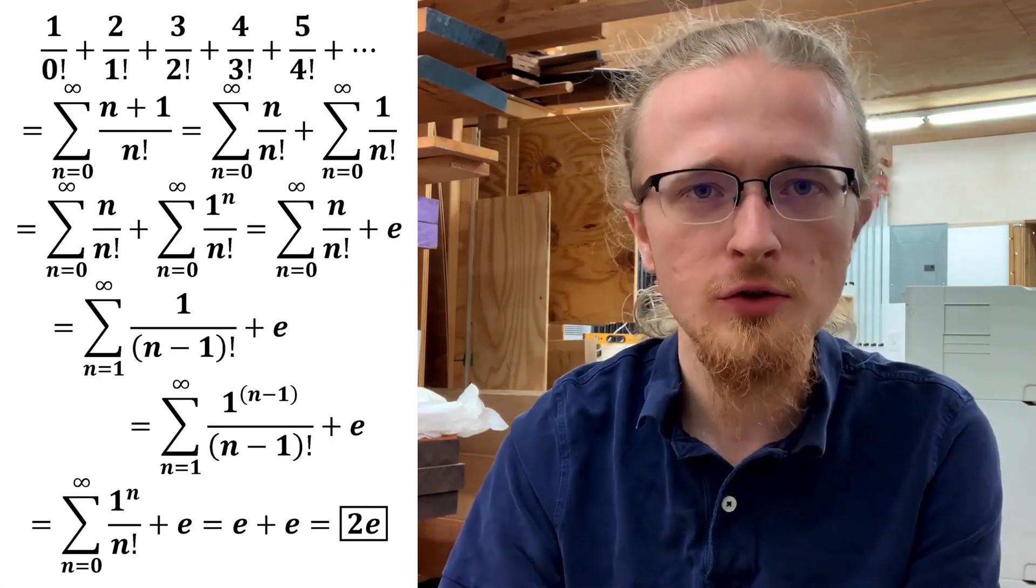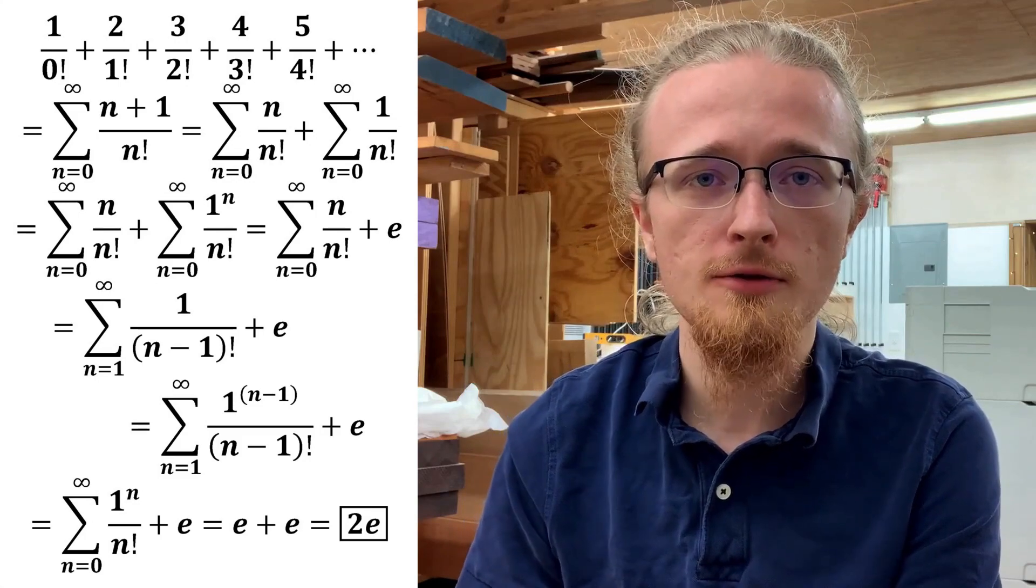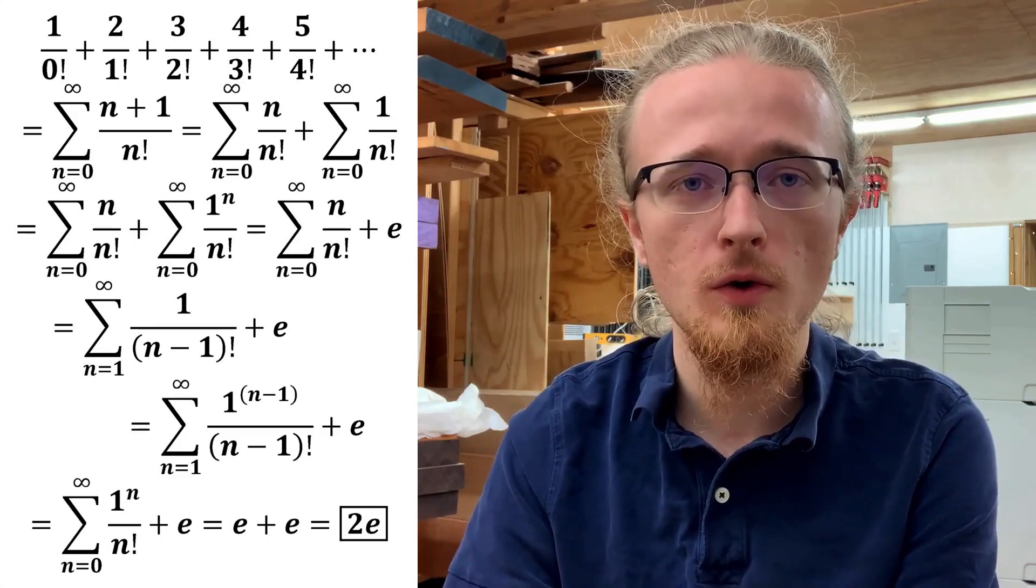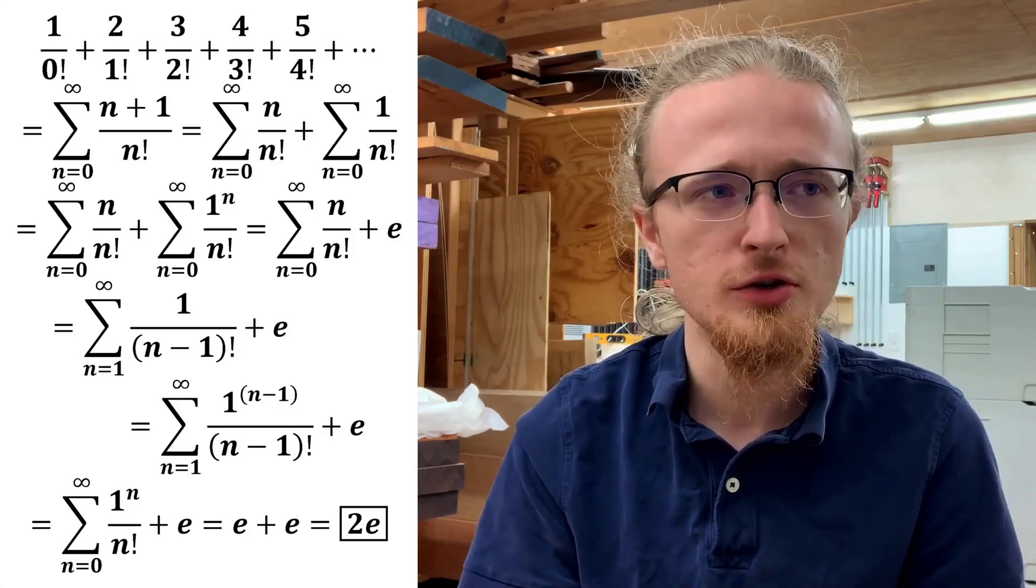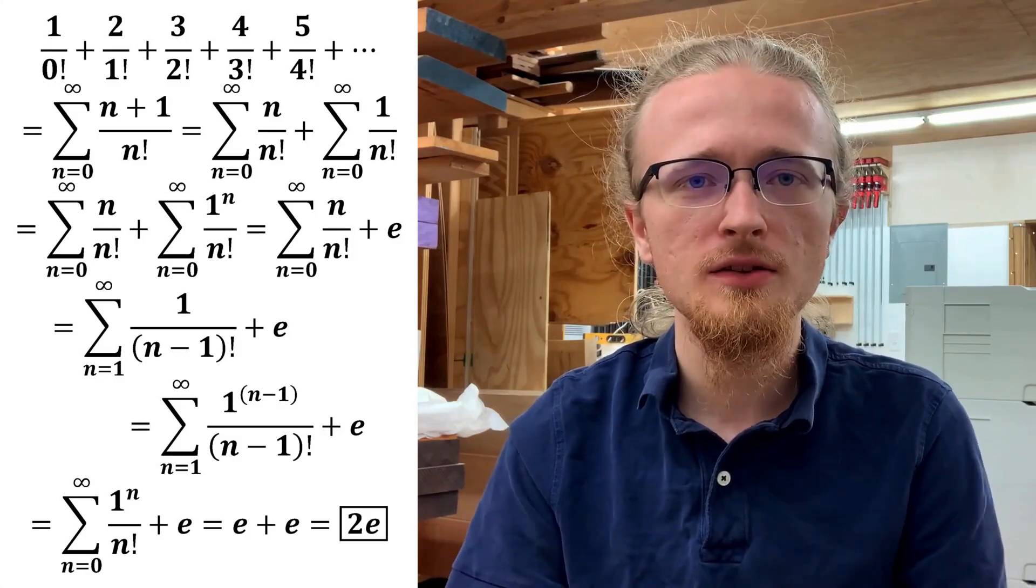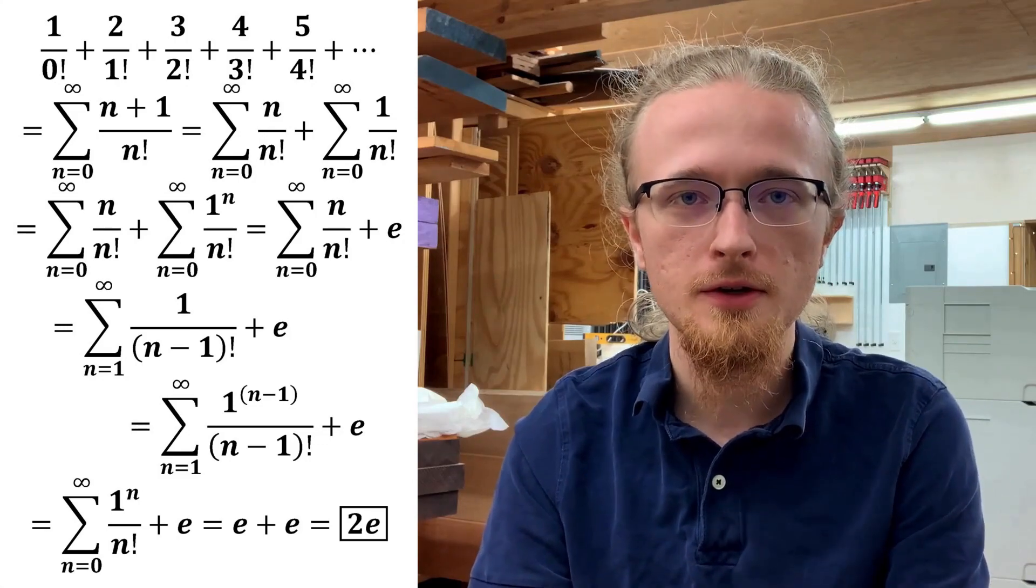Instead of just getting e, you get 2e. I find it kind of counterintuitive that replacing those 1s with the ascending positive integers would have the effect of multiplying the answer by 2, but nevertheless, that is the case, and I thought that made it cool enough for a video.